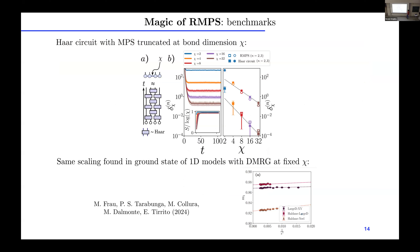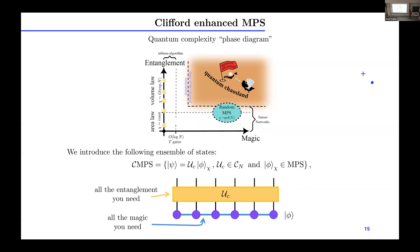Here are a couple of benchmarks of our results. Let me mention the second one, which is found in a completely different setting in another work by collaborators. We found pretty much the same scaling with bond dimension chi in a completely different setting — not random MPS per se, but still MPS — and found the same scaling of magic with the bond dimension. Motivated by this, we introduced what we call Clifford-enhanced MPS. MPS with polynomial bond dimension give all the magic of Haar states, while Clifford unitaries can generate volume-law entanglement.